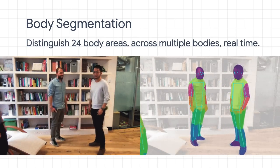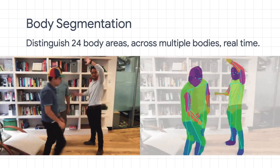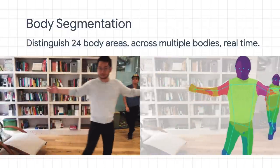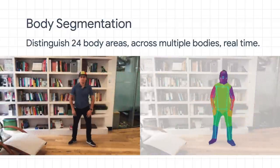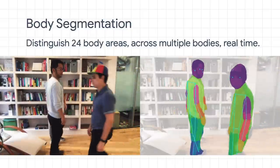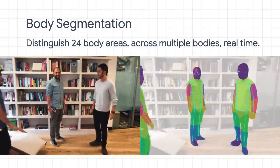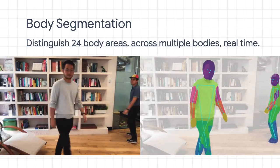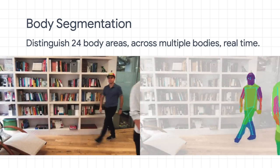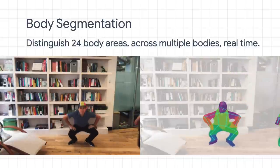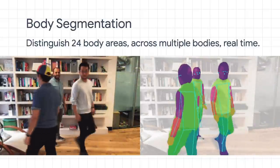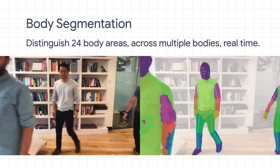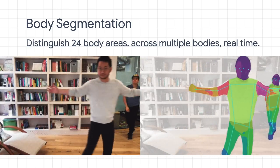Next up, we've got body segmentation. This model can distinguish 24 body areas across multiple bodies, all in real time. Notice from the image on the right how the bodies of each person are correctly segmented with different colors for different body parts. We can also get the pose estimation too — those lines in blue — to estimate where the skeleton is, so we can do things like gesture recognition and much more.